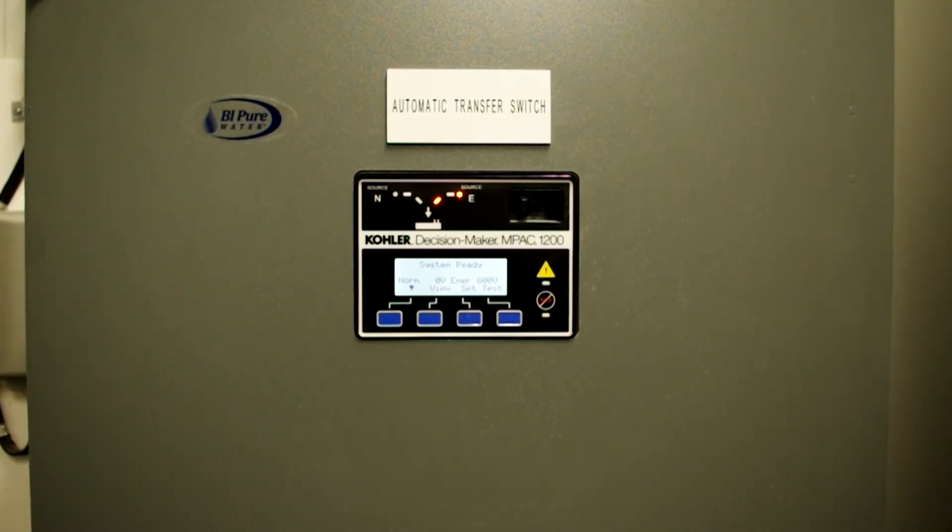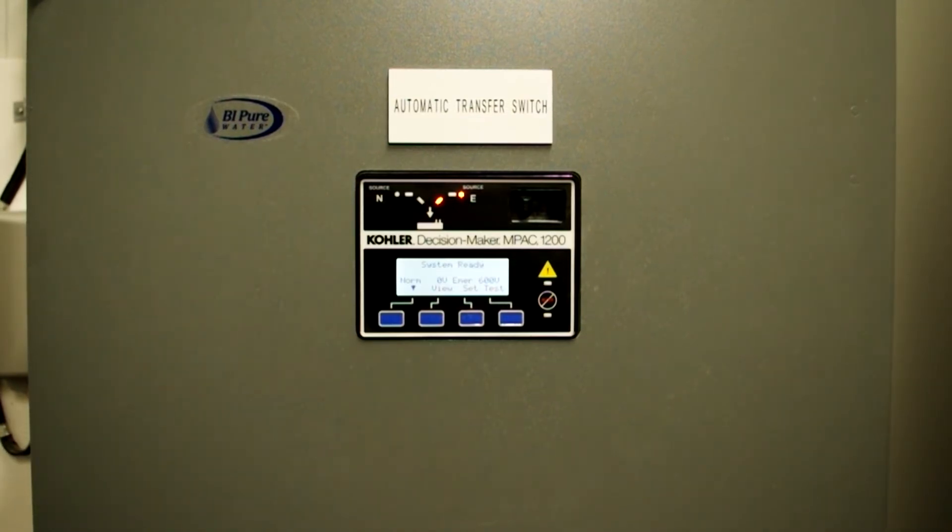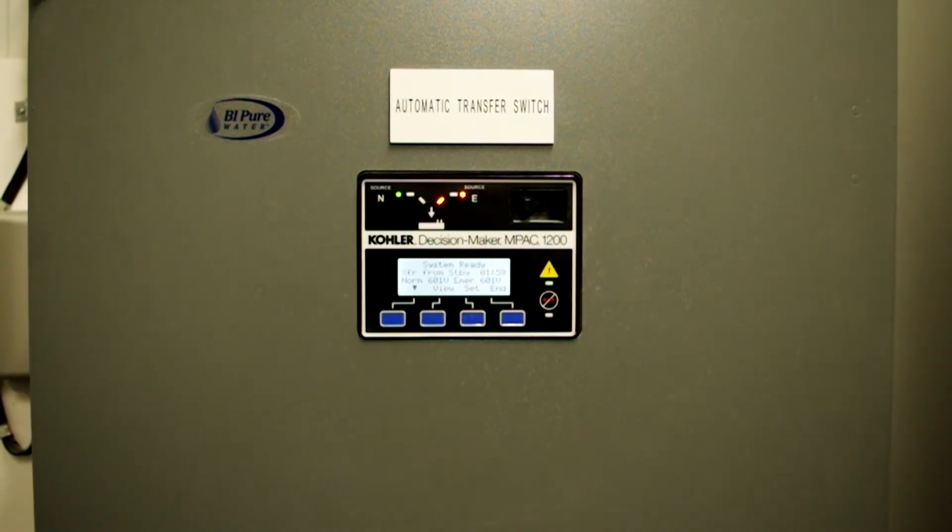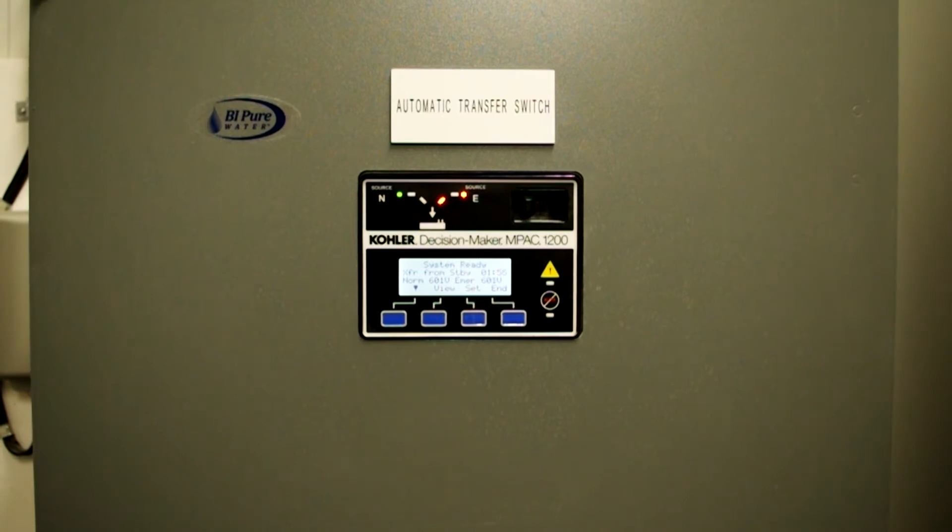So the generator continues to run until normal power is restored. When normal power is restored, you'll see the green light comes on indicating that there is normal power.